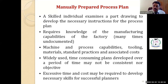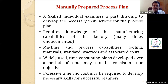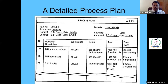Excessive time and cost may be required to prepare a manually prepared or traditional process plan since we are employing manpower. That is why nowadays most automotive industries are not using manually prepared process plans; they are moving into generative type or variant type. Before proceeding to computer-aided process planning, you should have an idea about a detailed process plan prepared in a manufacturing industry.